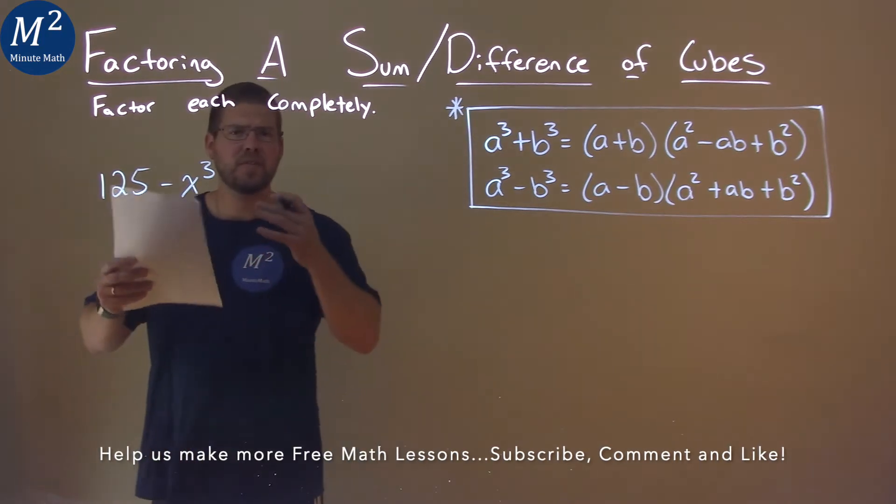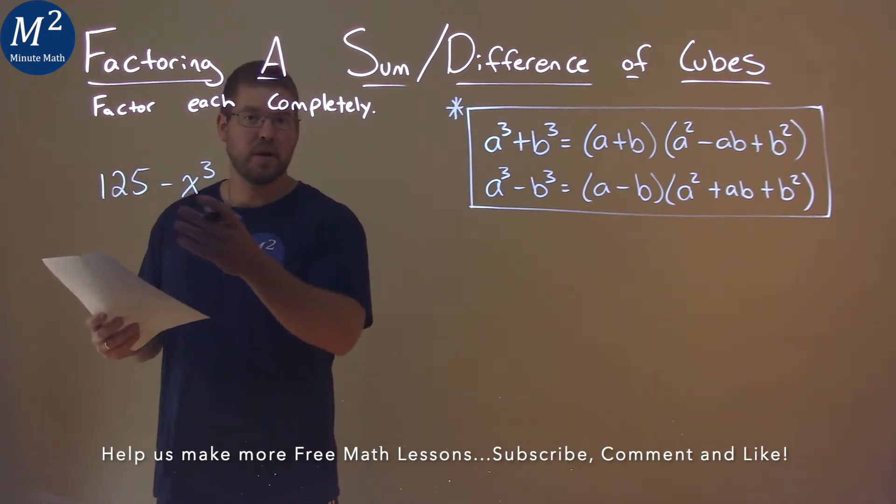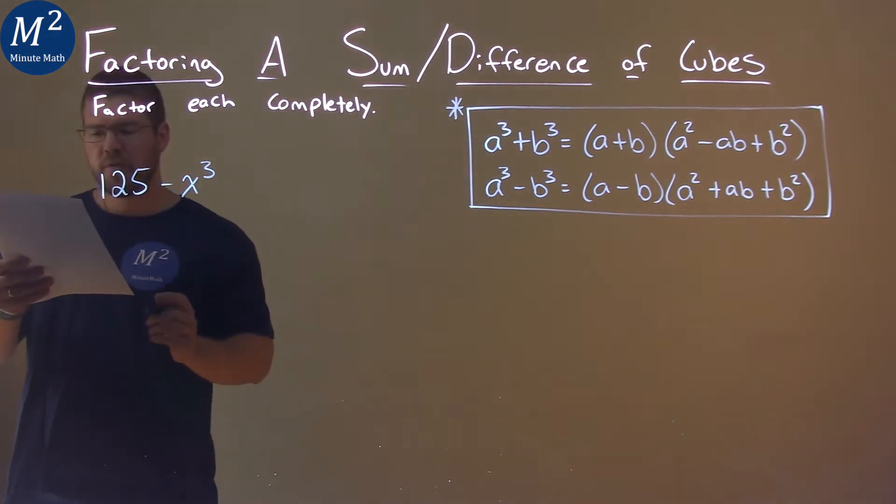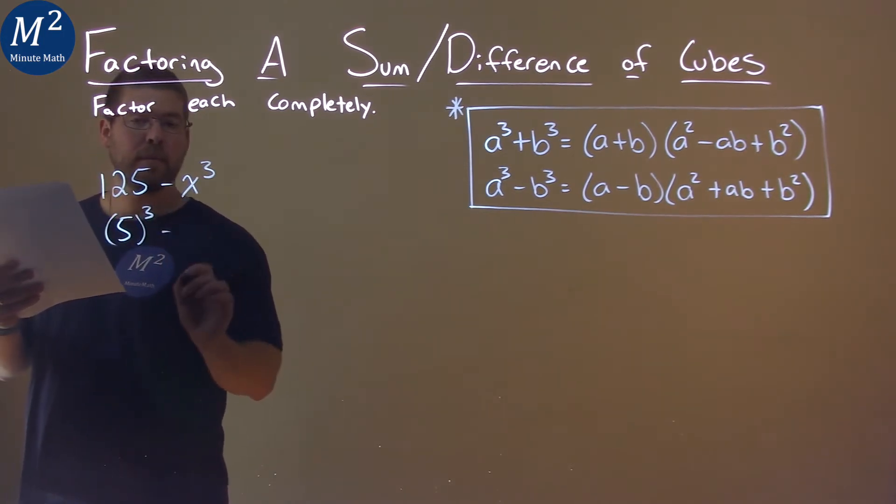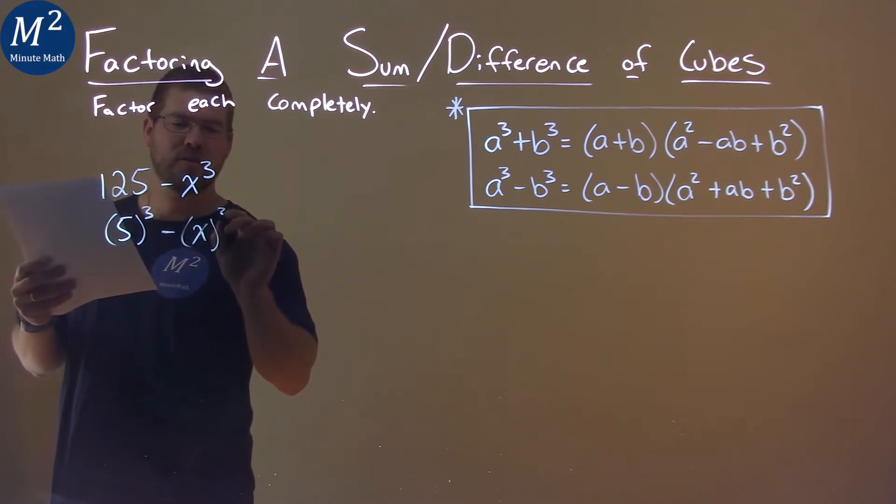Let's break down to see if we can write this as a difference of cubes. 125 is the same as 5 cubed, minus our x value which is just cubed.